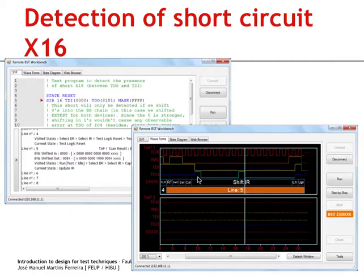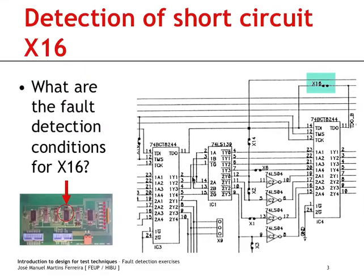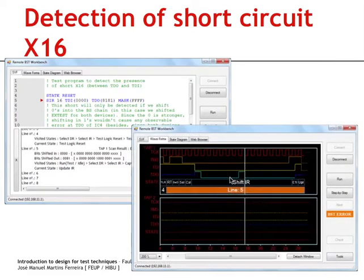Recall that 8.1 is 1 0 0 0 0 0 0 1. So the first 8 bits captured within the instruction register of this device are shifted out properly. Then after the first 8 test clock cycles, clock cycle number 9 will cause the short circuit to be detected.